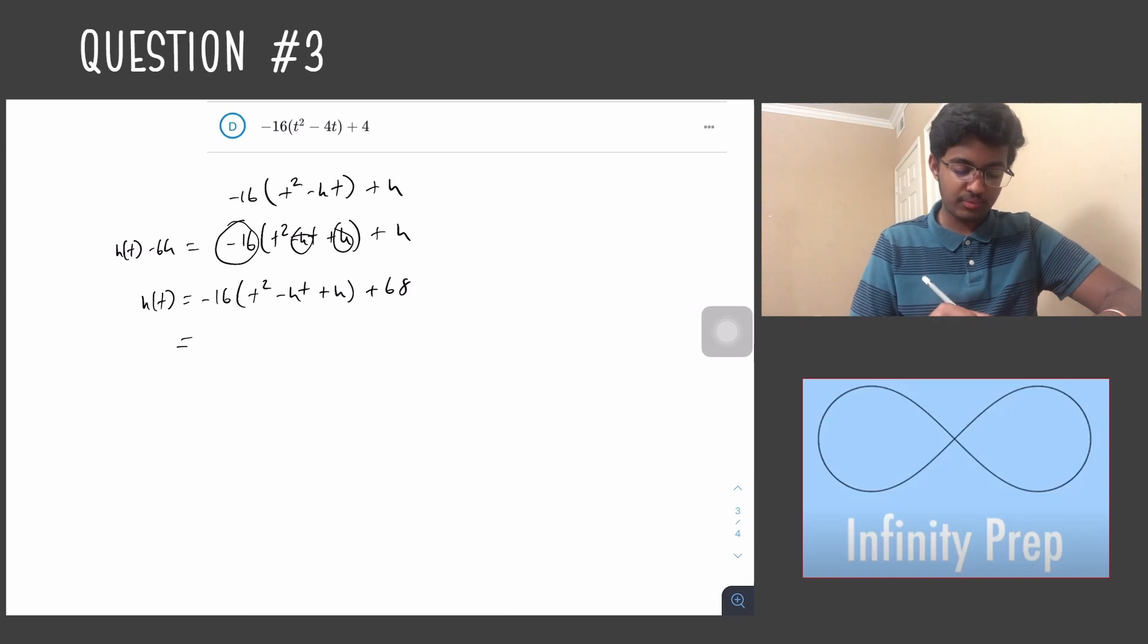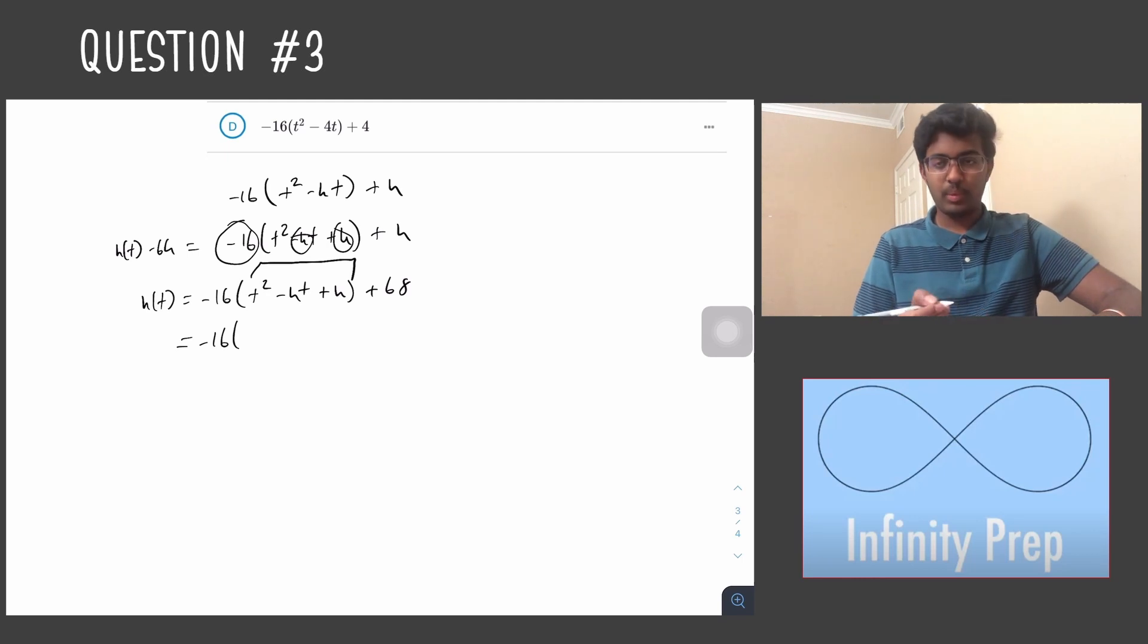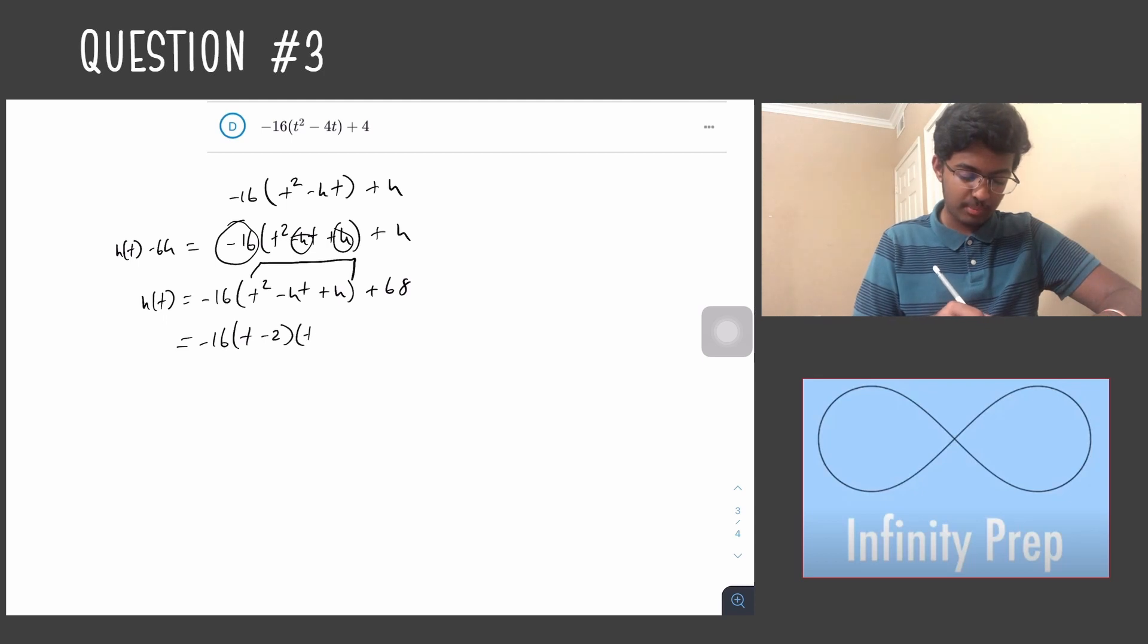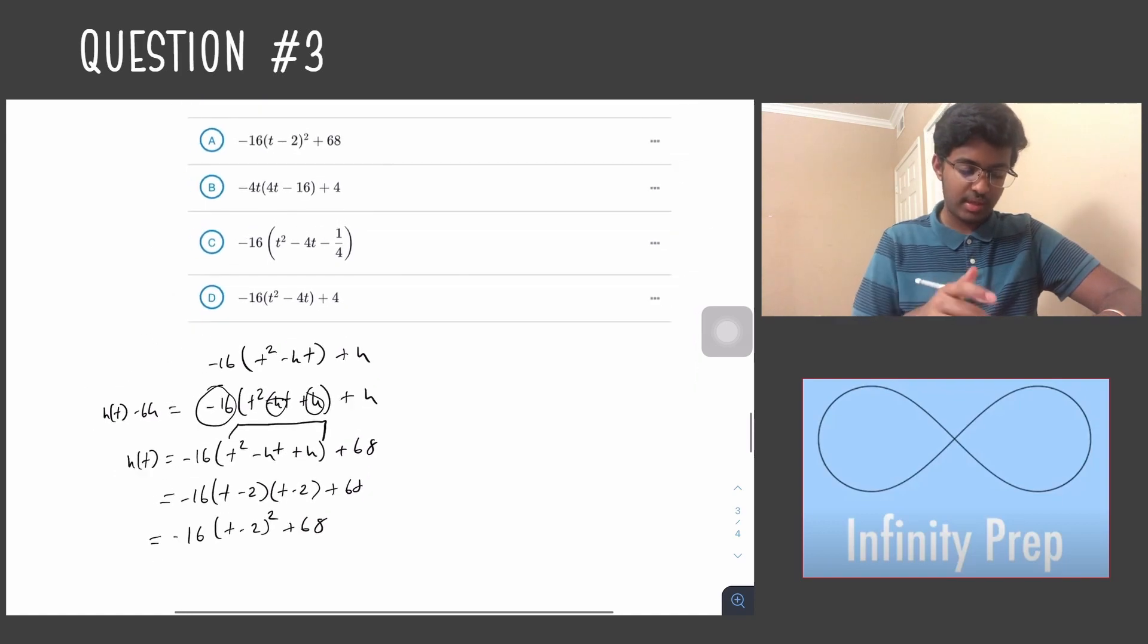Now we need to factor this right here. When we factor this equation we get (t - 2) times (t - 2) + 68. This is simply -16(t - 2)² + 68, and this is answer choice A.